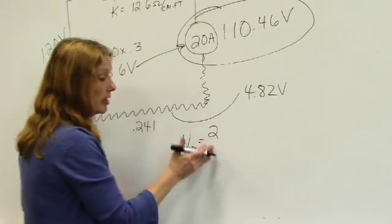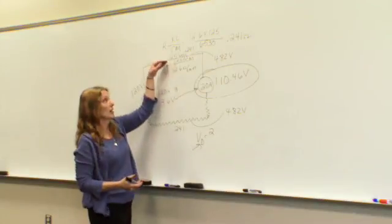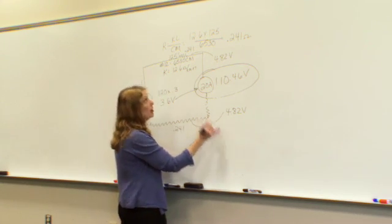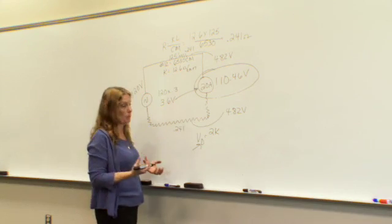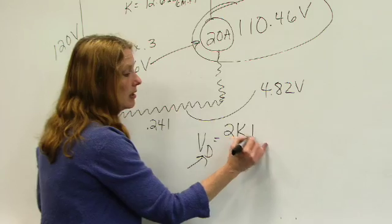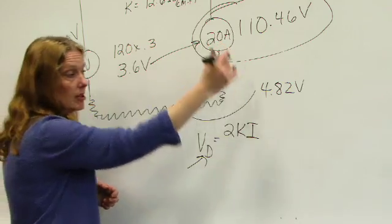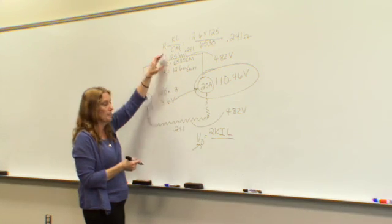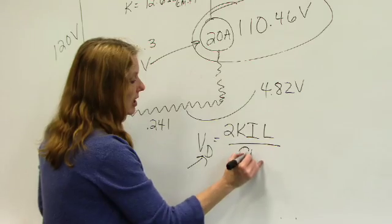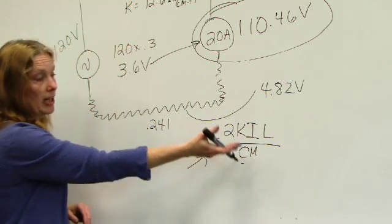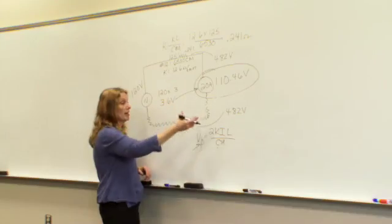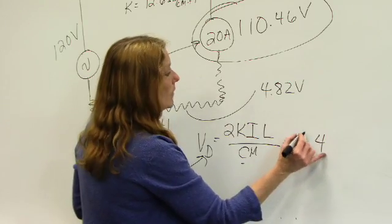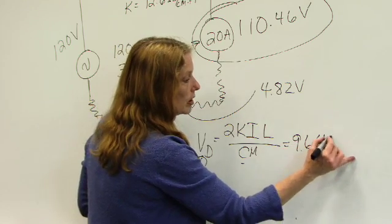I have a number 2, and that 2 signifies going to my load and coming back from my load. K, which we already know about, that's that constant 12.6 in this case that we use the code book for. I, which is my current, 20 amps. L, which is that length, a little bit too long for this circuit at 125 feet. And circular mil area, once again we have that circular mil area. Plugging all those numbers in, just like we had, we end up coming up with our 9.64 volts.